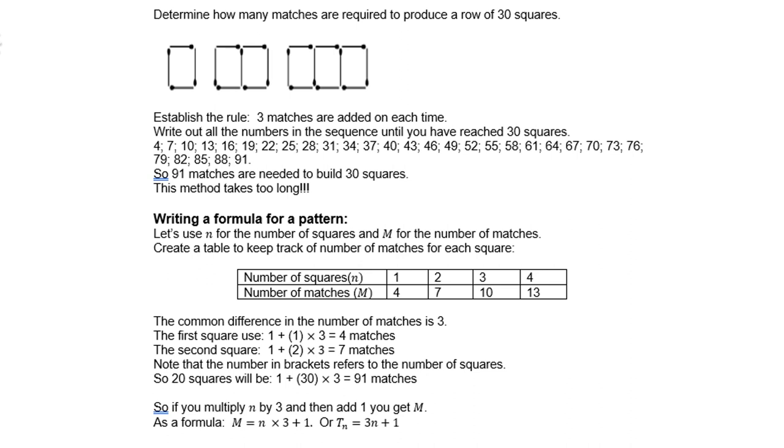At the moment we see how many matches for the first square. If you look at it quickly, you see it's 4 matches. Look at pattern number 2. There's 2 squares. You count 7 matches. Look at the third pattern. There's 3 squares, and you count 10 matches.